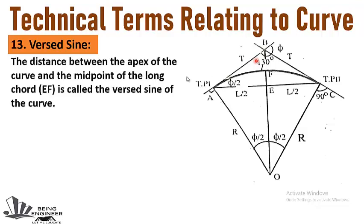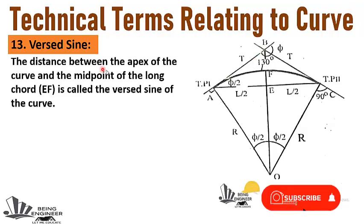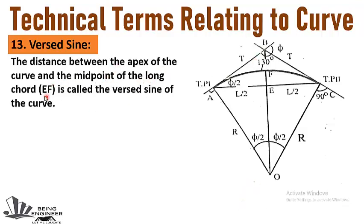The thirteenth term is versine. The distance between the apex of the curve and the midpoint of the long chord, EF, is called the versine of the curve. As you can see, the distance between the midpoint of the long chord and the apex or summit of the curve represented by distance EF is called the versine.